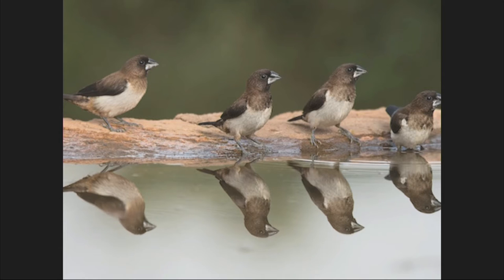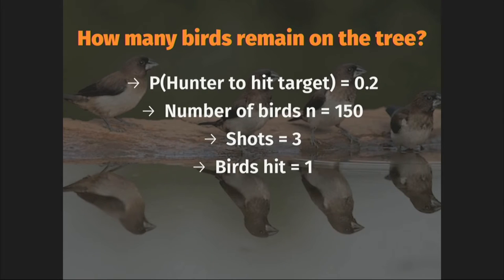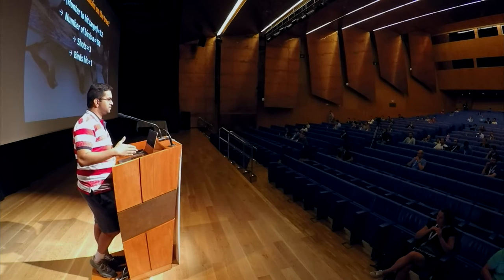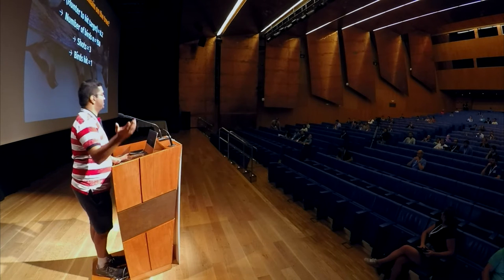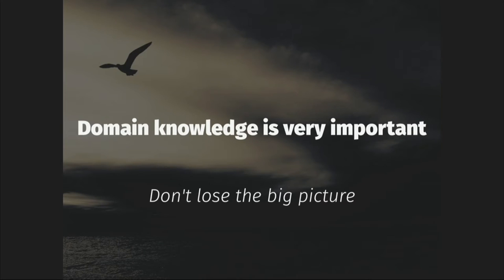There's a bunch of birds in a tree — actually 150 birds. A hunter comes along and fires three shots. His probability to hit the target is 0.2, so 20% of the time he can hit. He shoots three times and one bird is hit. The question is: how many birds now remain on the tree? They all fly away. So you can use complicated models, ensemble models, deep learning models, but never lose the big picture — it's extremely important.